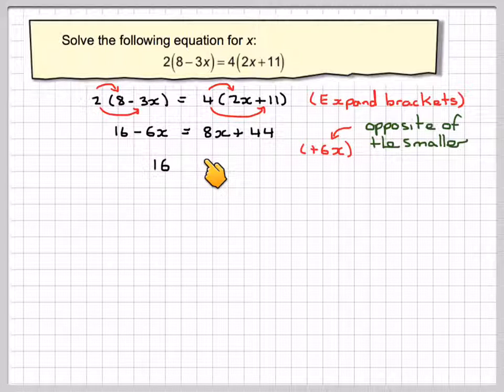If I add 6x to this side, 8x plus 6x gives me 14x, and I've still got the plus 44.